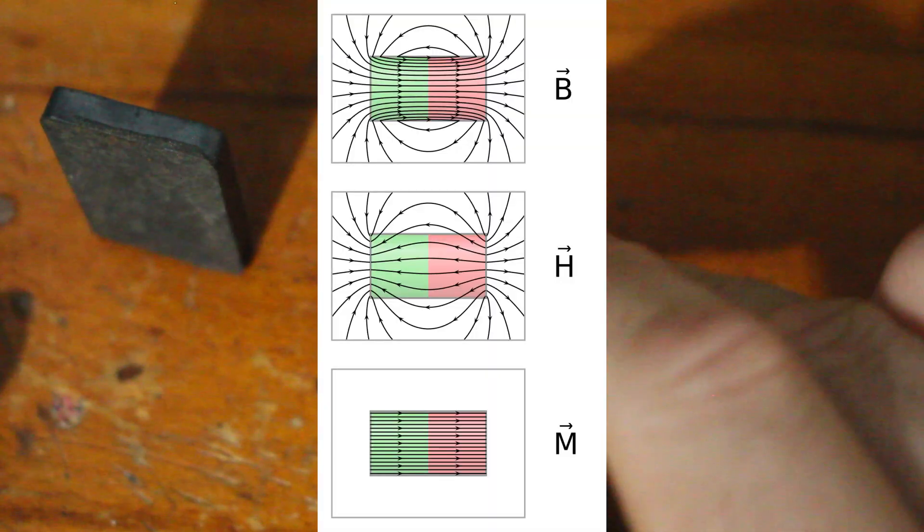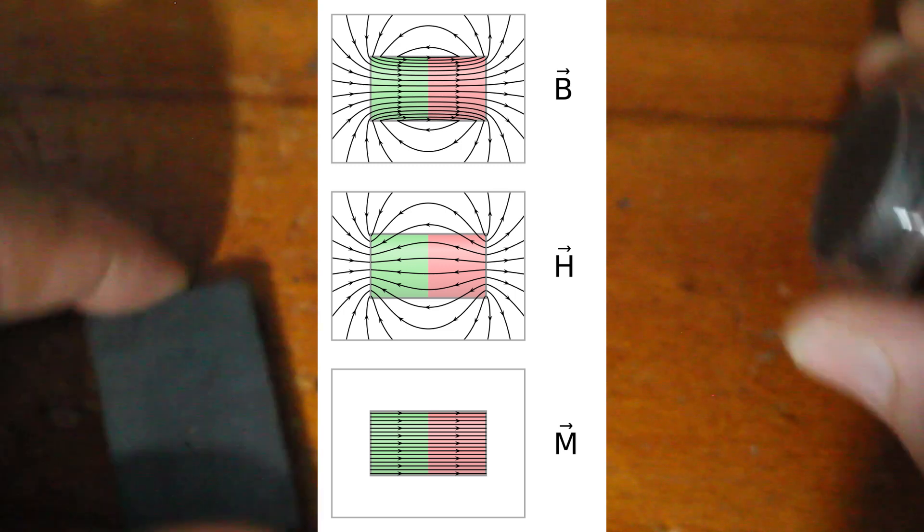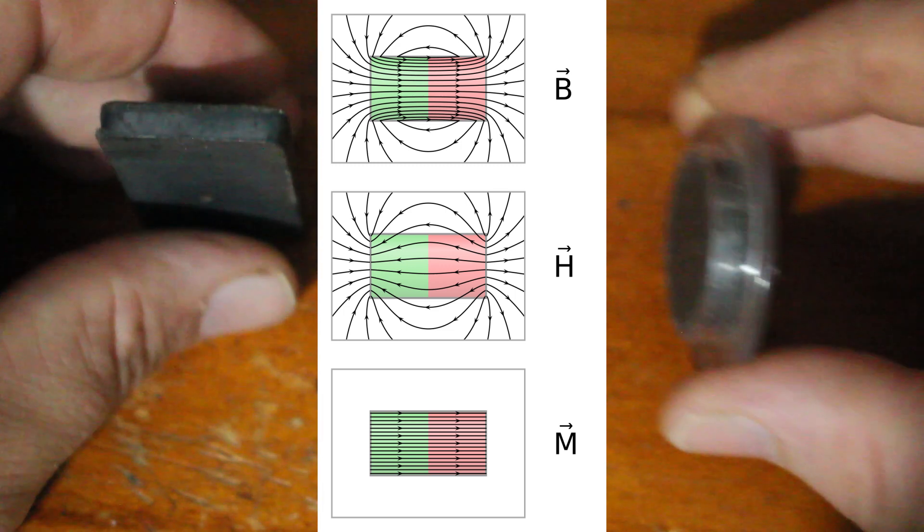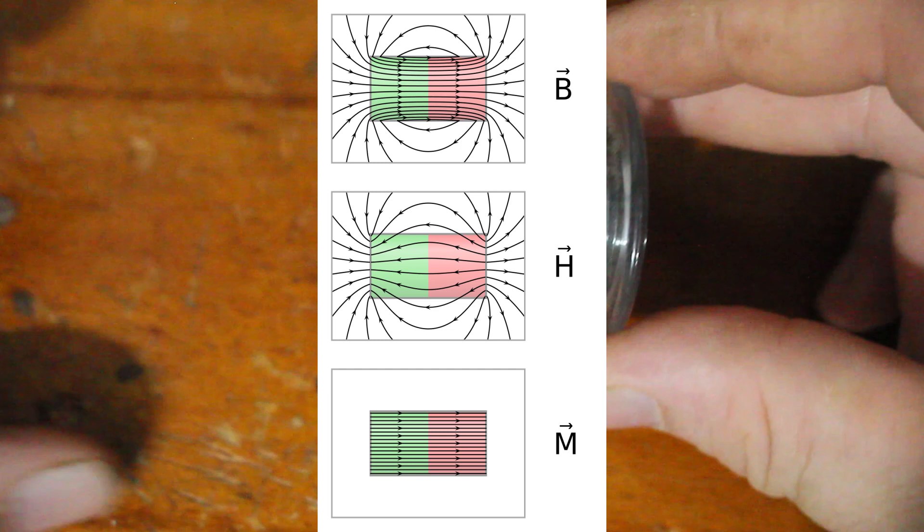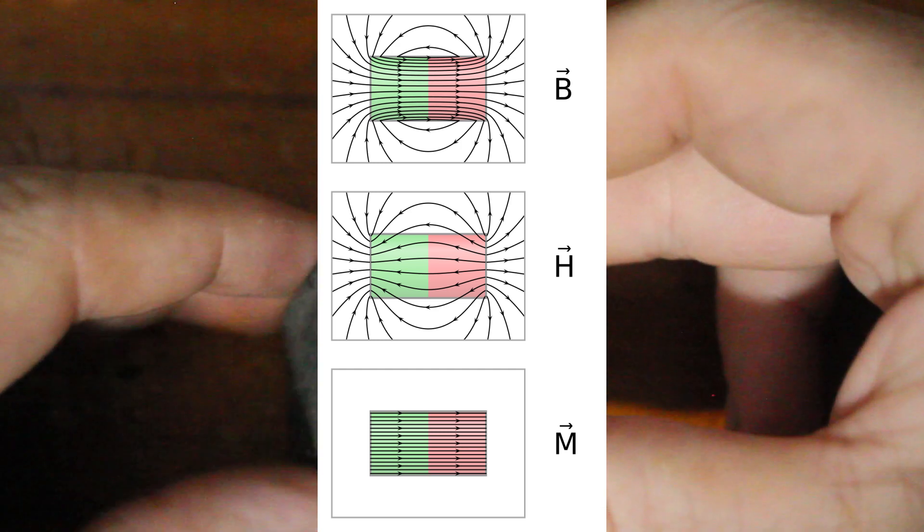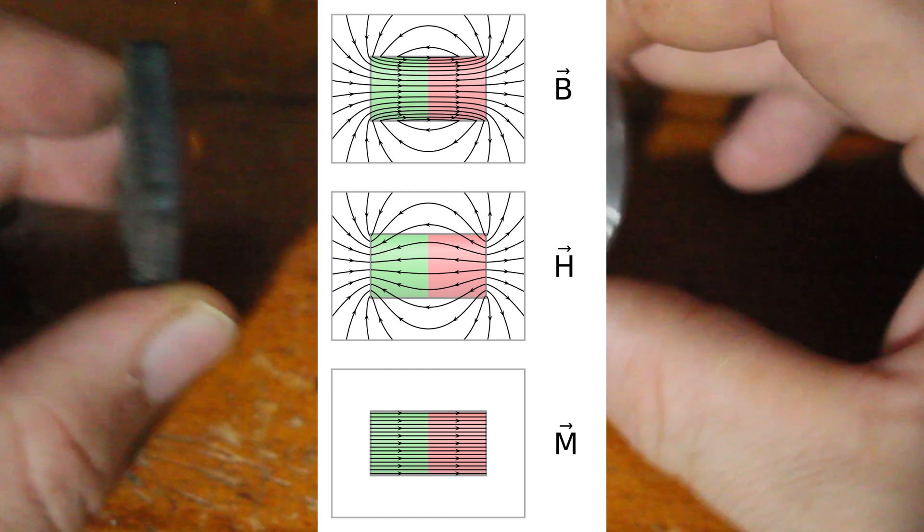The H field is also known as the magnetic field intensity or strength. Generally speaking, this is going to be pretty much exactly the same as the B field, that is, how much magnetic force exists.